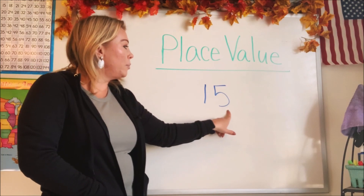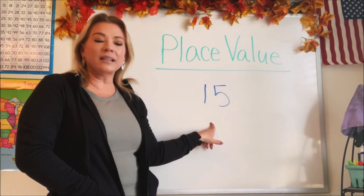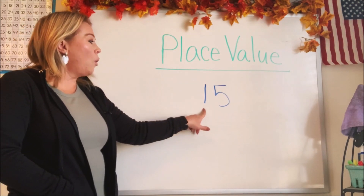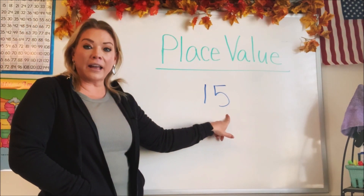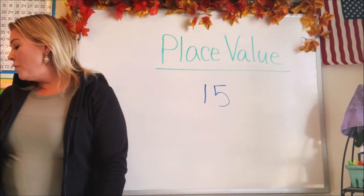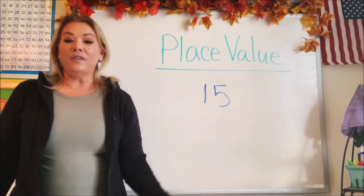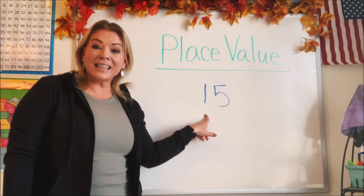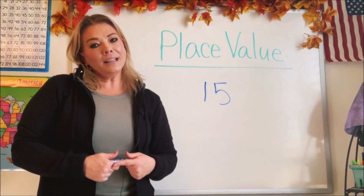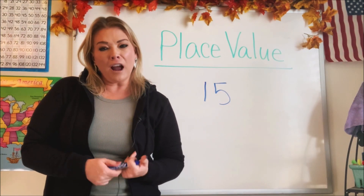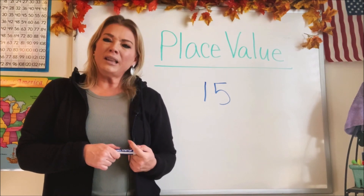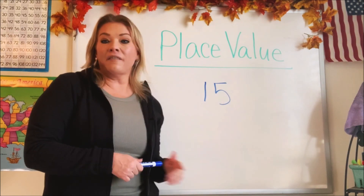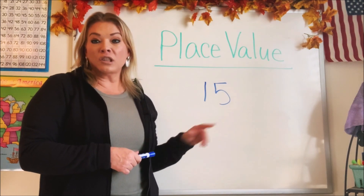I have a number here on the board. Do you know what number that is? That's number 15. We have a one and we have a five. Now did you know that even though the number is 15, each of the numbers has a place value. So let's go ahead and first figure out what place value means, and then I'll show you how to figure out which one goes in the right spot.